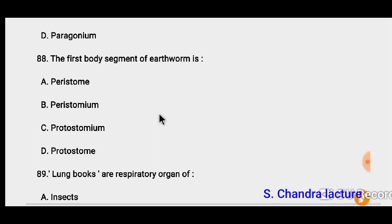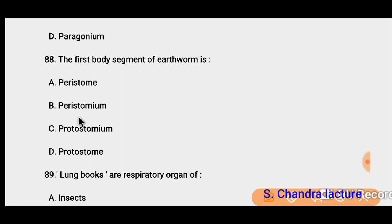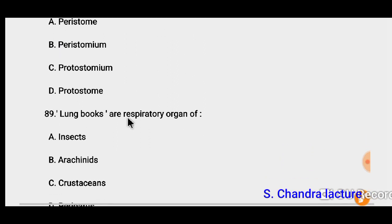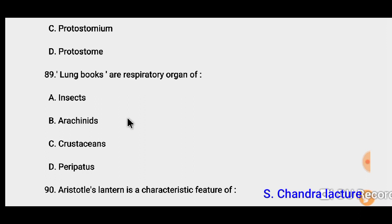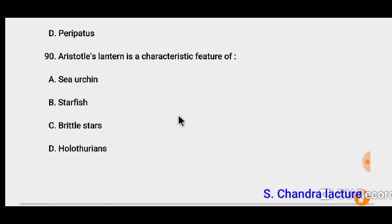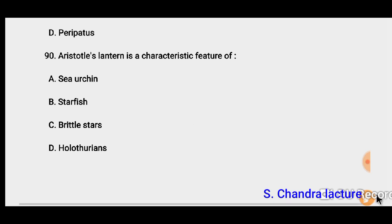Question 88: The first body segment of earthworm is peristomium. The mouth of the earthworm is also found in the peristomium. So the correct answer must be B. Question 89: Lung books are respiratory organs of arachnids. Question 90: Aristotle's lantern is a mouth part of sea urchin and is a characteristic feature of sea urchin.